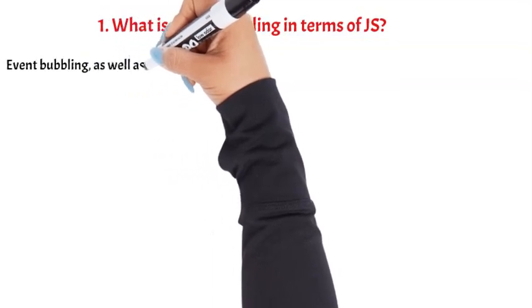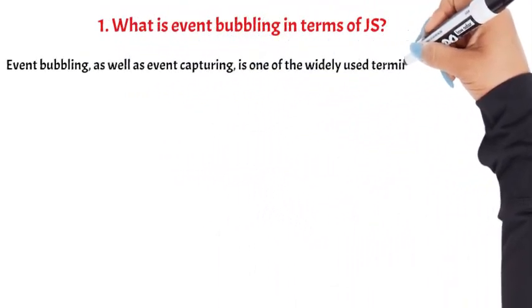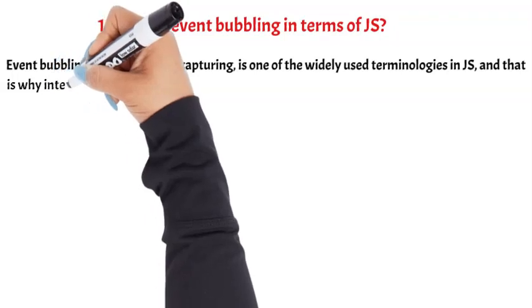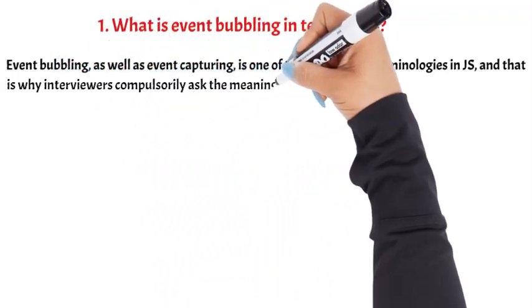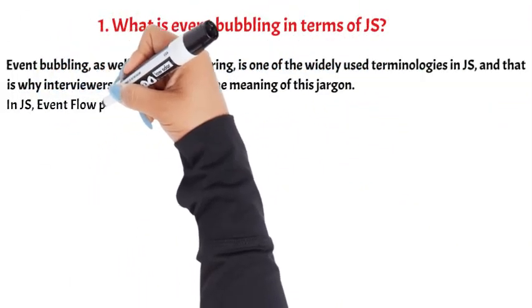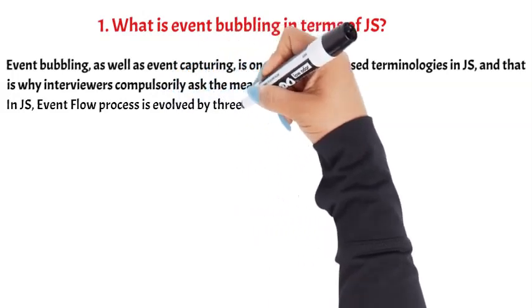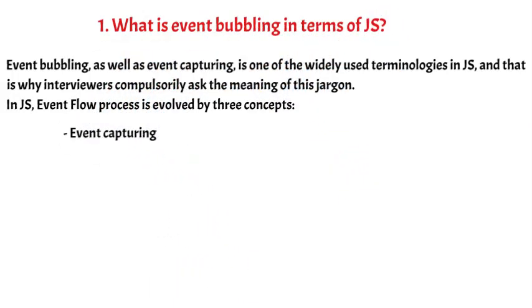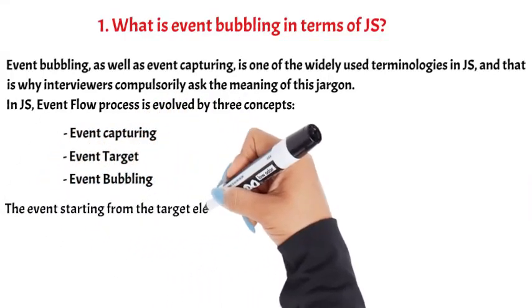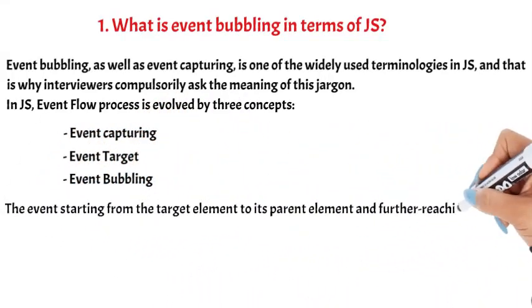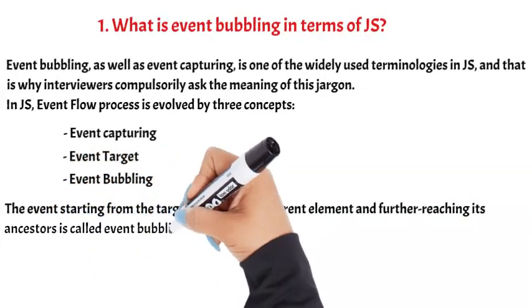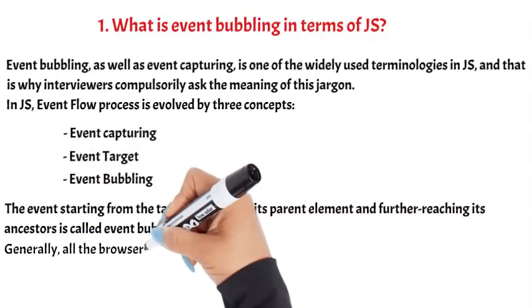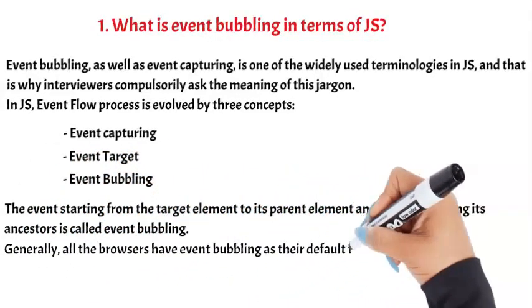Question 1: What is event bubbling in terms of JS? Event bubbling, as well as event capturing, is one of the widely used terminologies in JS, and that is why interviewers compulsorily ask the meaning of this jargon. In JS, event flow process is evolved by three concepts: event capturing, event target, and event bubbling. The event starting from the target element to its parent element and further reaching its ancestors is called event bubbling. Generally, all the browsers have event bubbling as their default flow of the event.